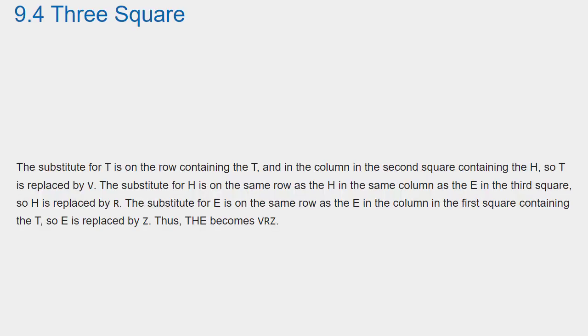The substitute for T is on the row containing the T and in the column in the second square containing the H, so T is replaced by V. The substitute for H is on the same row as the H in the same column as the E in the third square, so H is replaced by R. The substitute for E is on the same row as the E in the column in the first square containing the T, so E is replaced by Z. Thus, T-H-E becomes V-R-Z.